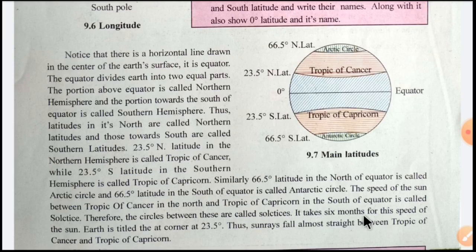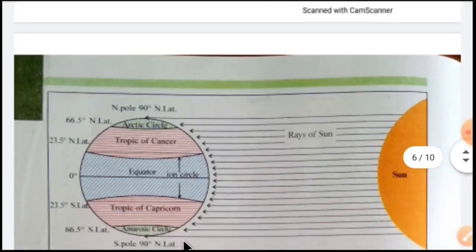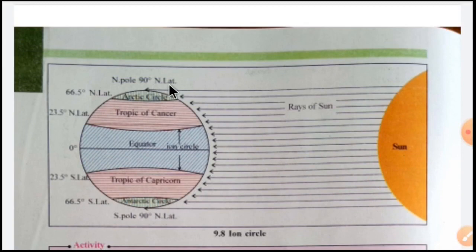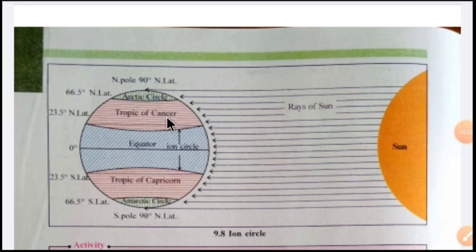The Earth is tilted at an angle of 23.5°, and the Sun rises almost straight between the Tropic of Cancer and the Tropic of Capricorn. Here we can also see this with a picture showing the North Pole and South Pole, with Sun rays coming in straight lines between the Tropic of Capricorn and Tropic of Cancer.